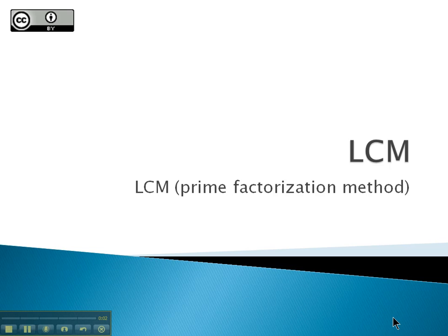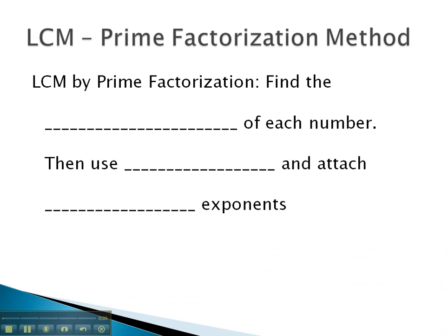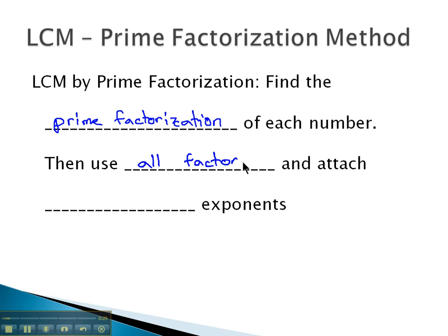In this video, we're going to look at how you can find the least common multiple using what's called the prime factorization method. The prime factorization method simply asks us to find the prime factorization of each number. Once we have the prime factorization, we'll have a whole bunch of factors we're working with. We will use all the factors in the least common multiple, and attach to each factor the highest exponent that appeared on each factor.